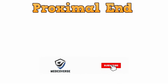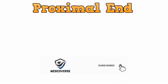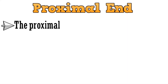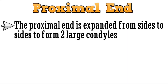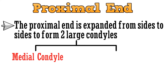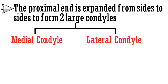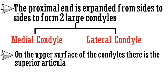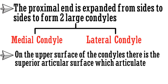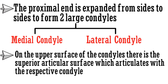Starting with the proximal end. The proximal end is expanded from side to side to form 2 large condyles — the medial condyle and lateral condyle. On the upper surface of the condyles, there is the superior articular surface, which articulates with the respective condyles of the femur bone.